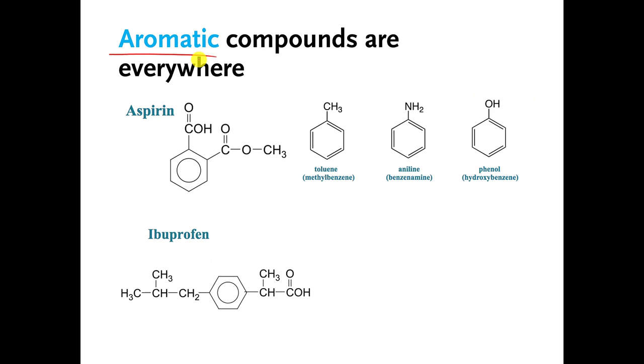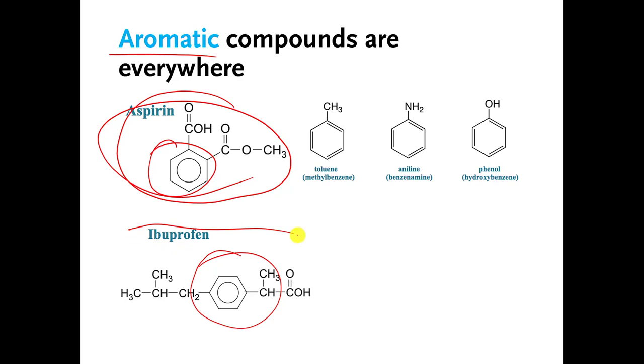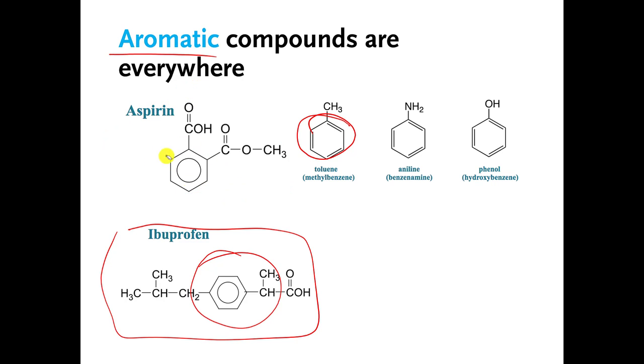You can see aromatic compounds everywhere. This is aspirin, aspirin has an aromatic functional group. This is ibuprofen, you can see the aromatic functional group. So aromatics can be drawn like this, or they can be drawn like that, and I want you to realize that you could see it in either way.